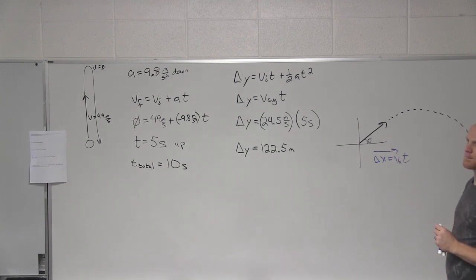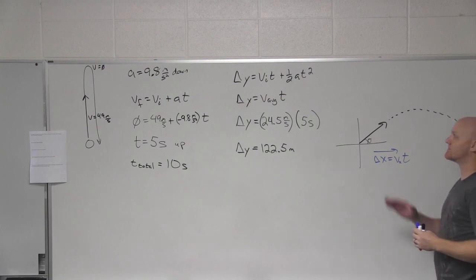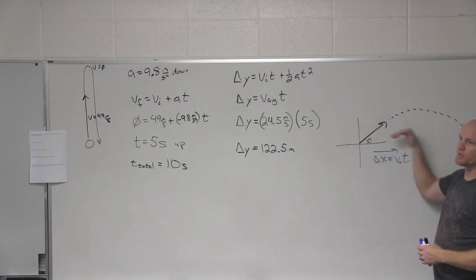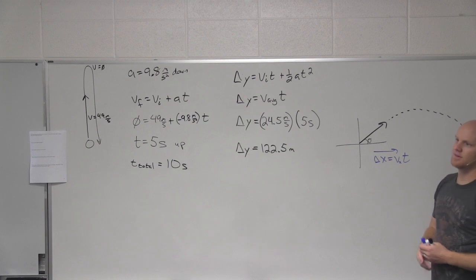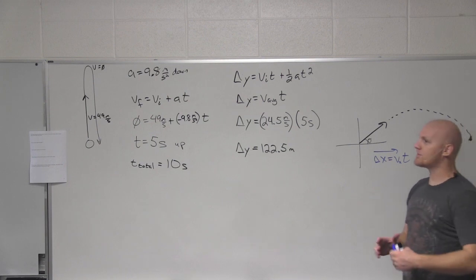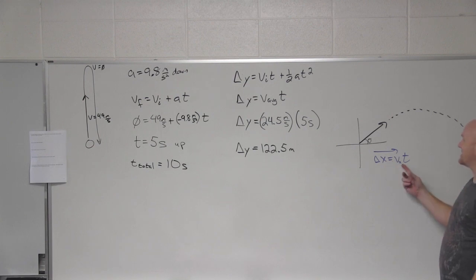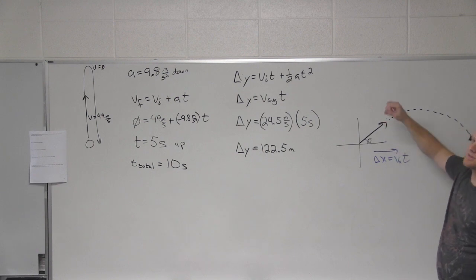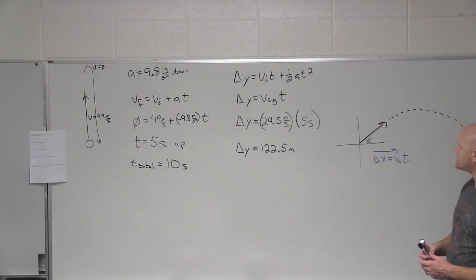Why does acceleration only act vertically? Because gravity points down, which is vertical — gravity only operates in the vertical direction, not in the horizontal direction. We never fall sideways; we fall down. So with no gravity in the x direction, delta-x = v_x · t is the only equation we have. In the vertical direction, we use all the kinematic equations that apply with uniform acceleration.